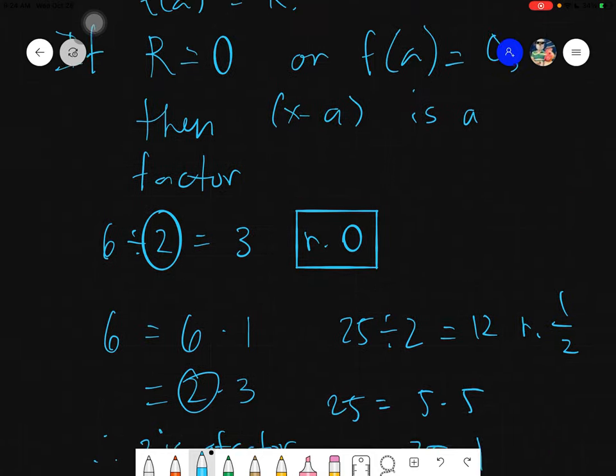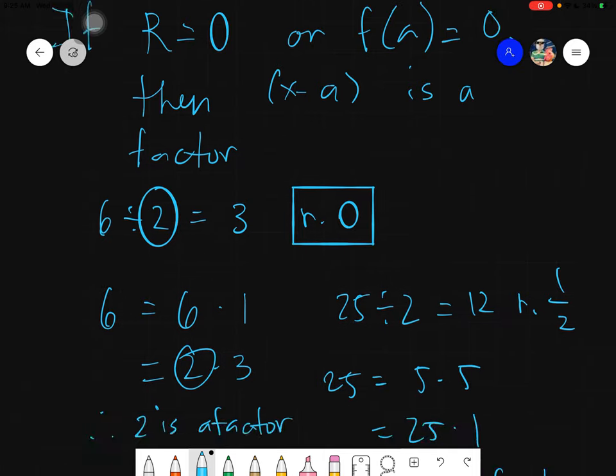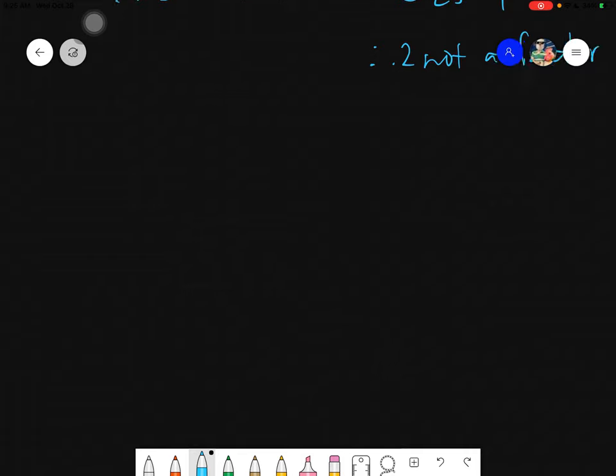So in the remainder theorem, it simply states that if the remainder is 0, it's a factor. It's just as simple as that. You are just simply determining is it a factor or not. So maybe let's have an example so that we can clearly understand. And the factor theorem has other applications, but in this case, we'll just be determining is it a factor or not. So for example, let's have the easiest one.